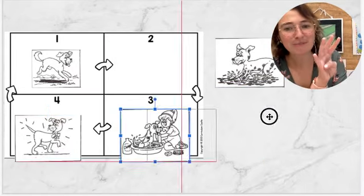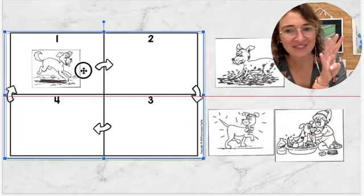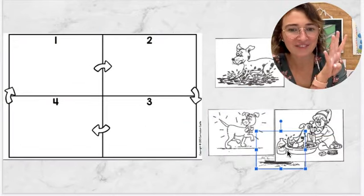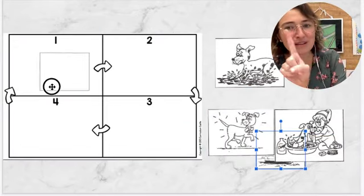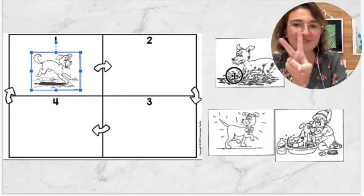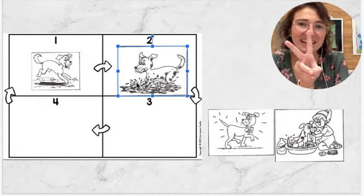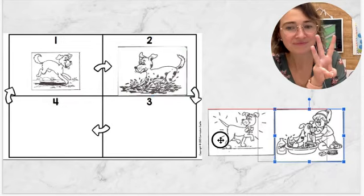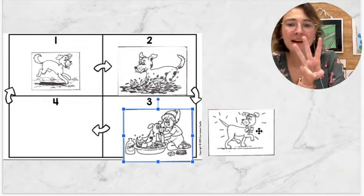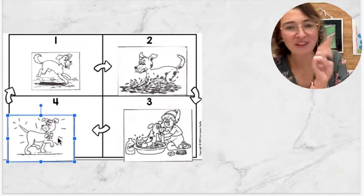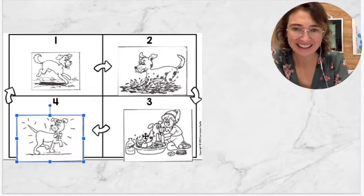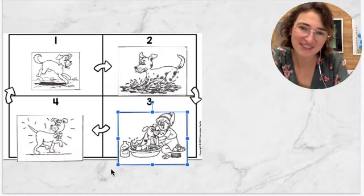So if the pictures were out, you can put them in order. First, the dog plays. Then he gets muddy. Then he gets a bath. Fourth, he is clean. There's pictures of the dog.